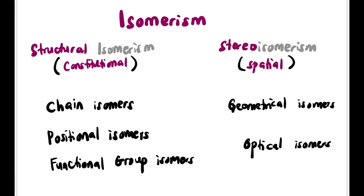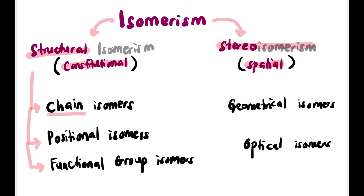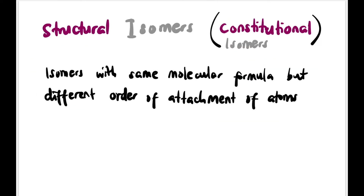Here's the bigger picture of isomerism. We can categorize it into structural isomerism — also called constitutional isomerism — and stereoisomerism, also called spatial isomerism. Structural isomerism can be further divided into chain isomers, positional isomers, and functional group isomers. Stereoisomerism can be further divided into geometrical isomers and optical isomers. In this video, we will focus on constitutional isomerism.